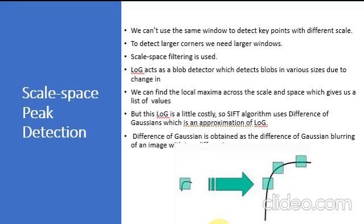Laplacian of Gaussian is found for the image with various sigma values. Laplacian of Gaussian acts as a blob detector which detects blobs at various sizes due to change in sigma. In short, sigma is a scaling parameter.